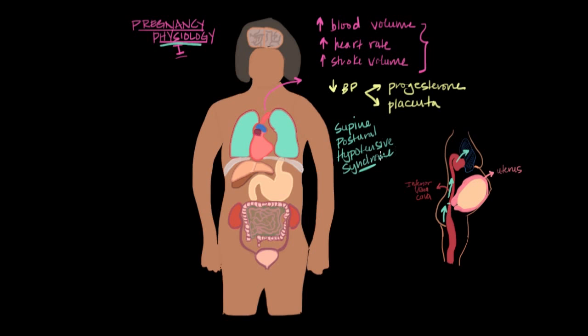So that's where the hypotensive in this name comes from. So the woman starts to feel lightheaded and like she's about to faint, especially when she's on her back because that's the position in which the uterus is exerting the most pressure on the inferior vena cava.